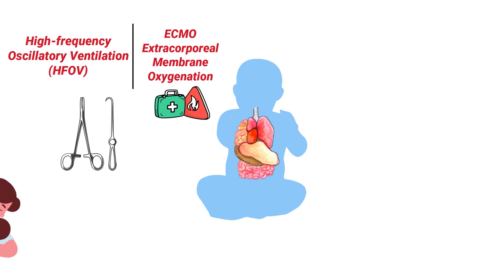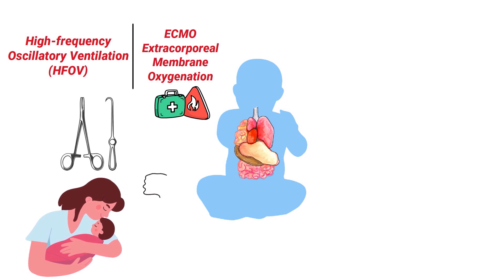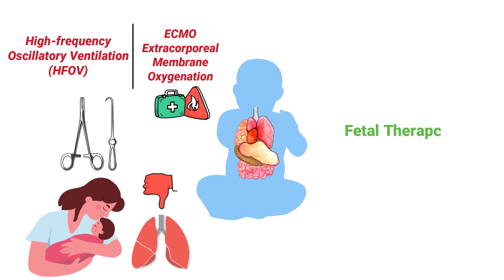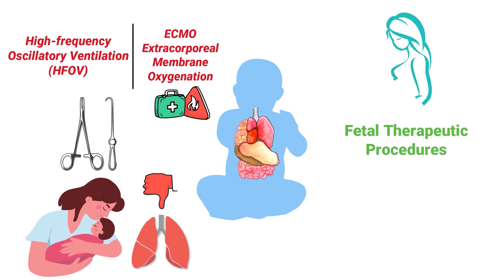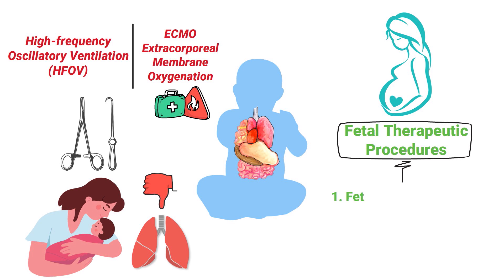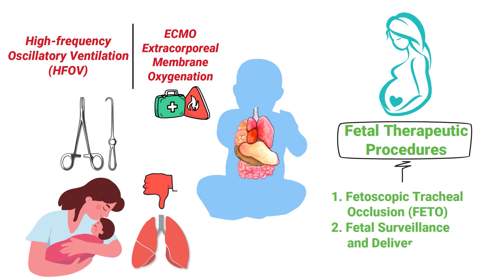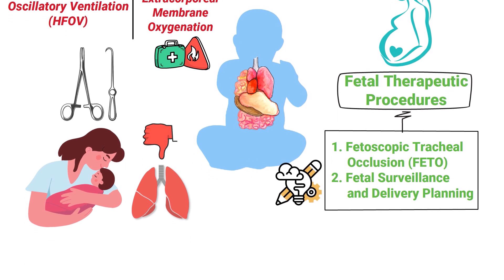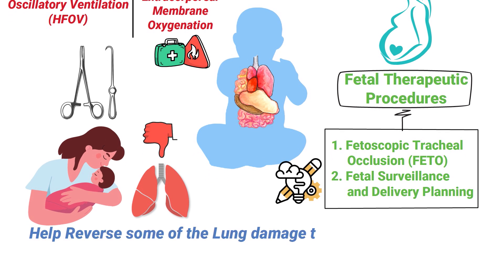Unfortunately, surgical procedures that occur post-delivery do not address the lung damage that has already taken place. This is why fetal therapeutic procedures may be recommended during pregnancy. Some examples include fetoscopic tracheal occlusion and fetal surveillance and delivery planning. These techniques are designed to help reverse some of the lung damage that can occur when the lungs are compressed due to a congenital diaphragmatic hernia.